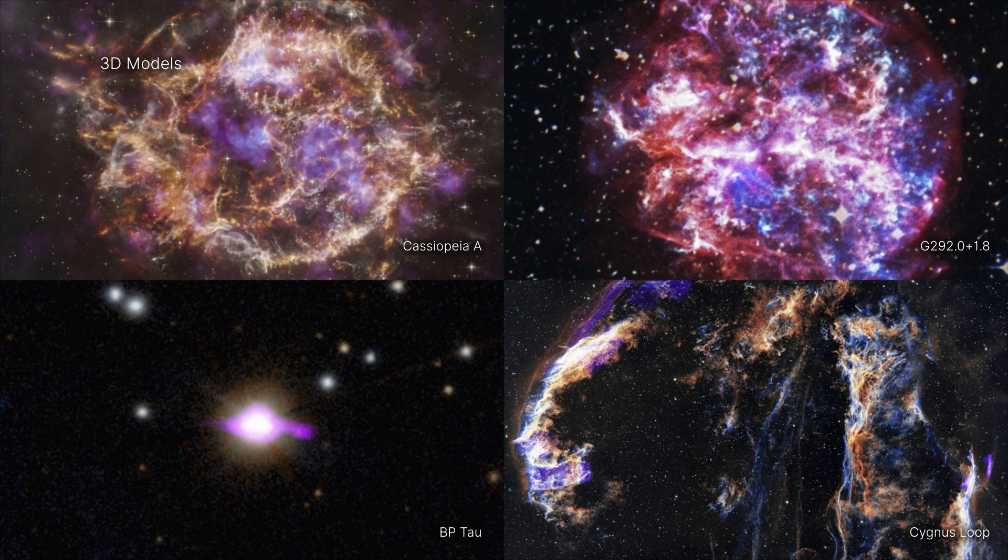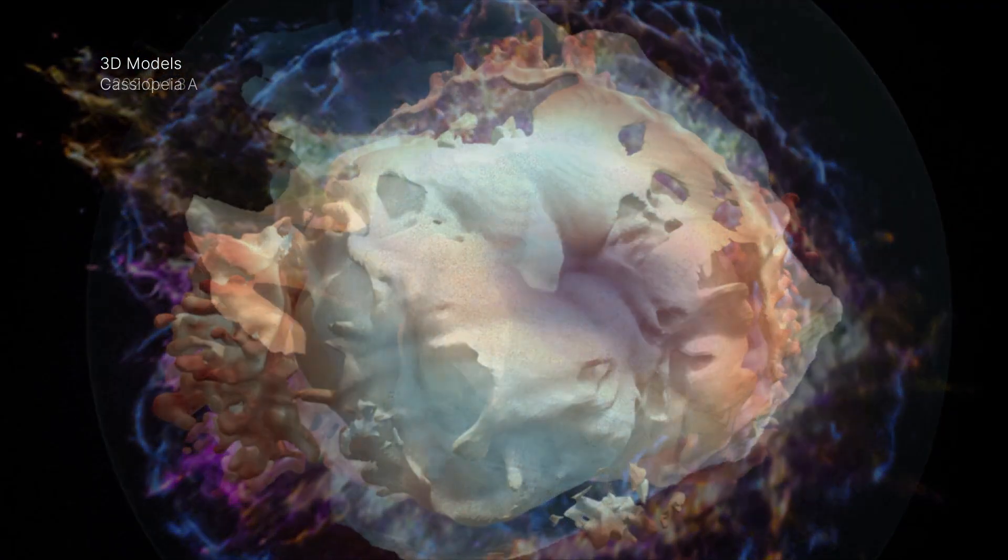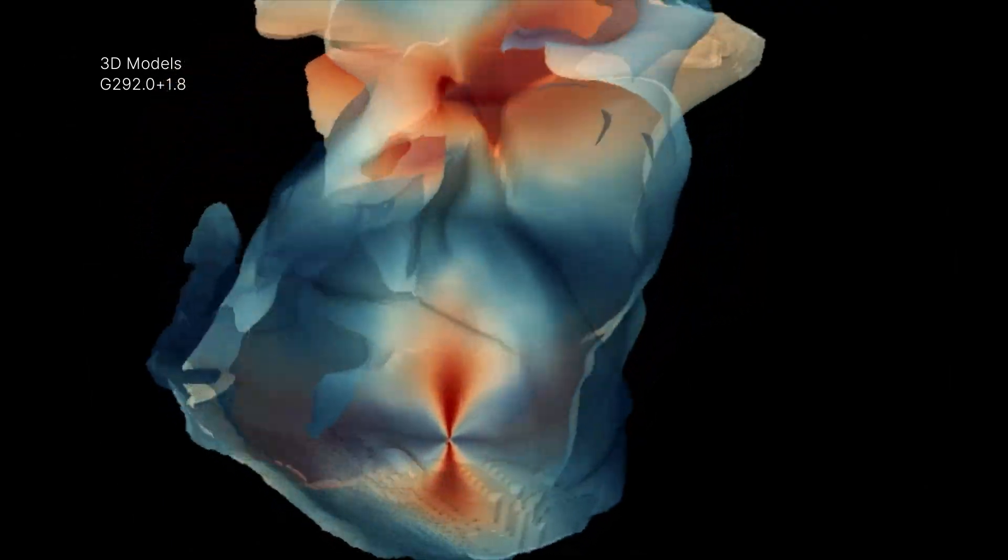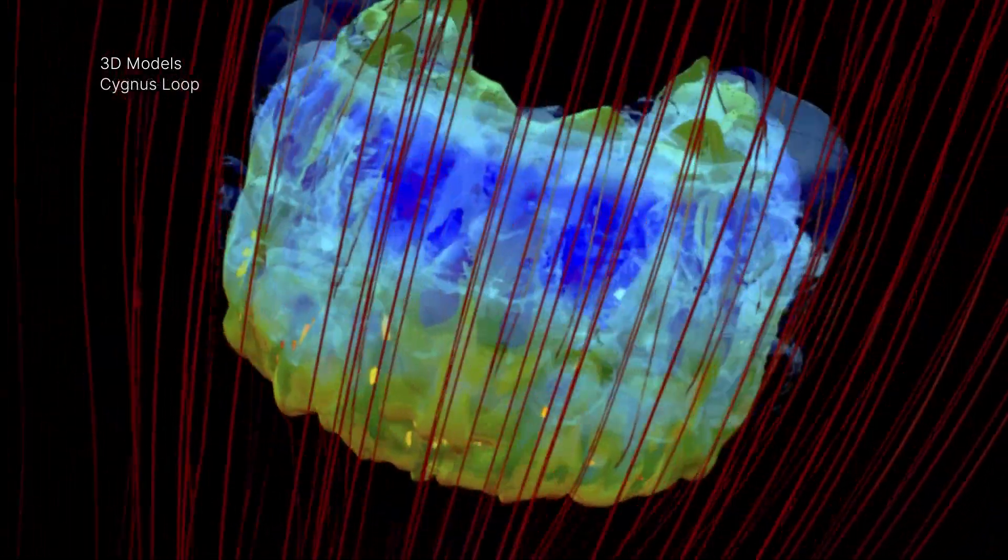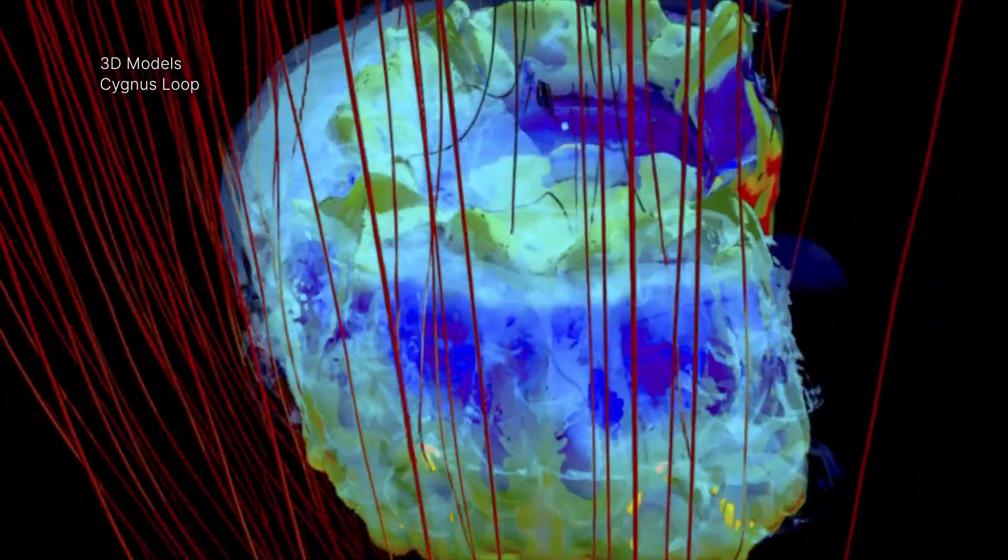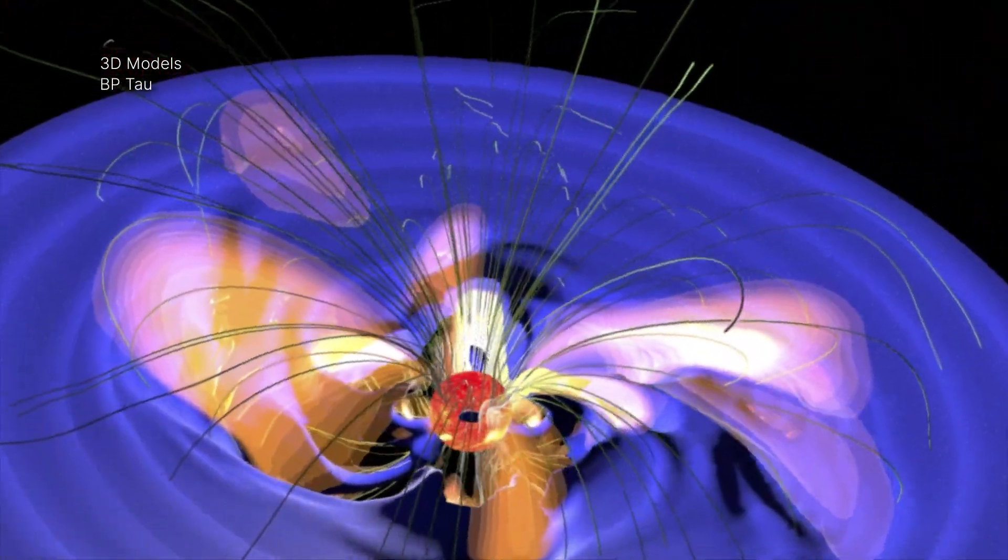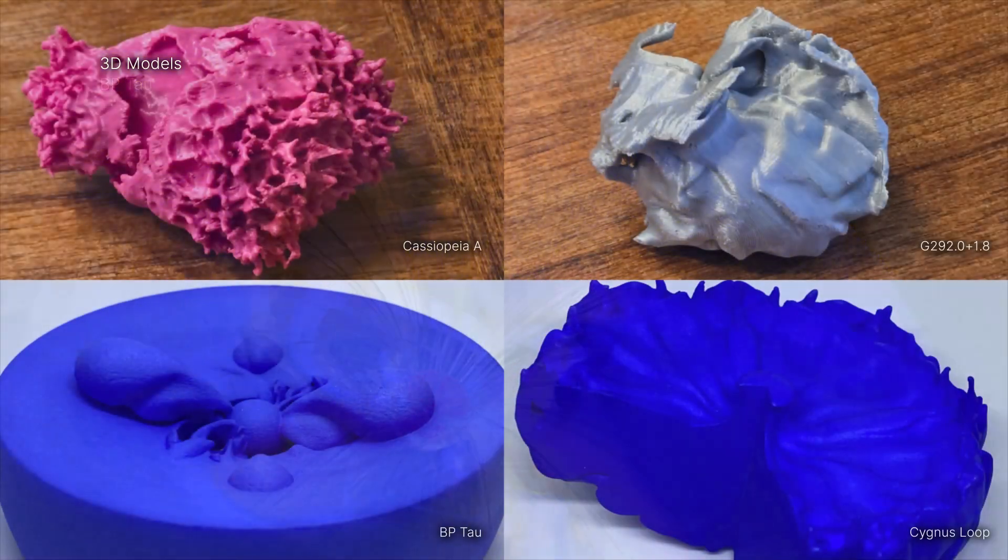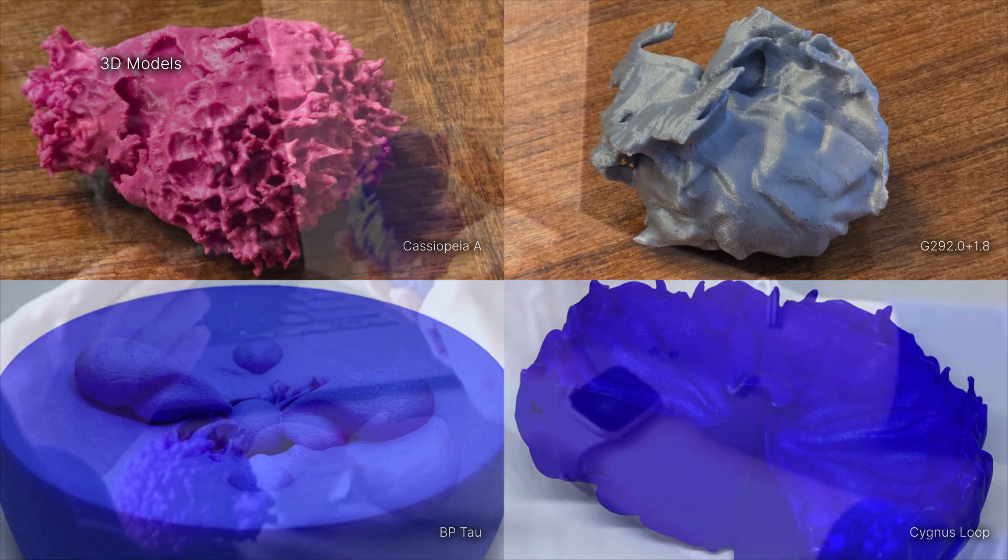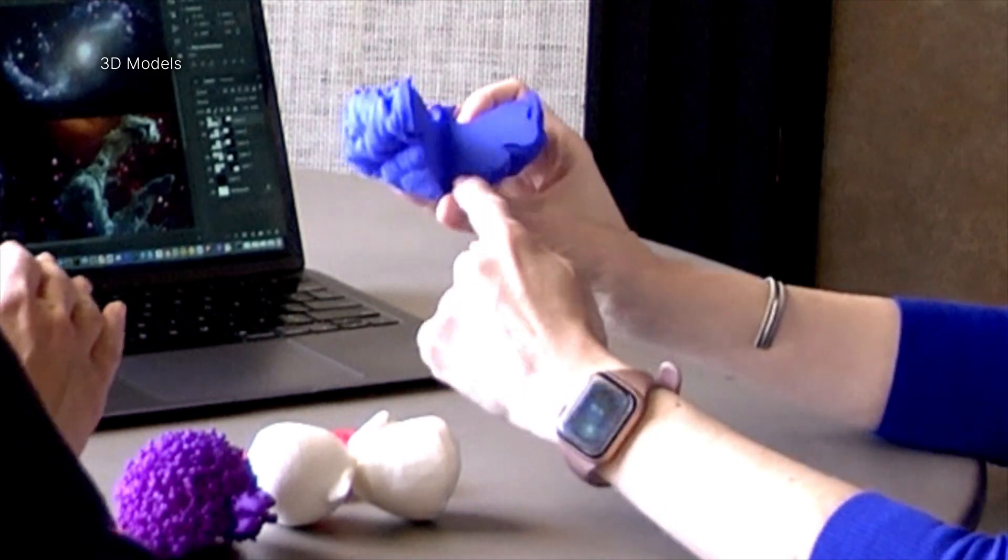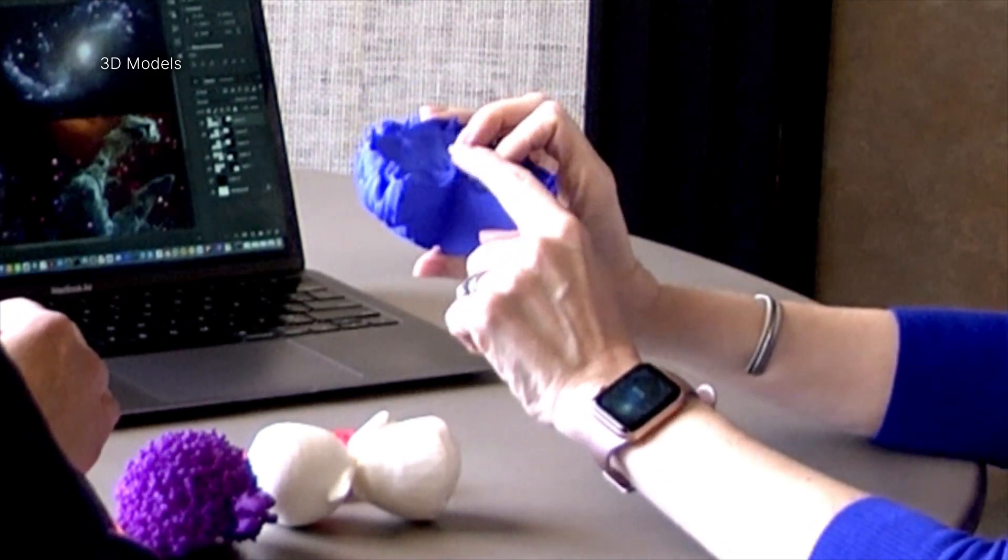However, looking at images and animations is not the only way to experience these data. The four new 3D printable models of Cassiopeia A, G292.0 plus 1.8, and Cygnus-loop supernova remnants, and the star known as BP Tau, let us experience the celestial objects in the form of physical structures that will allow anyone to hold replicas of these stars and their surroundings and examine them from all angles.